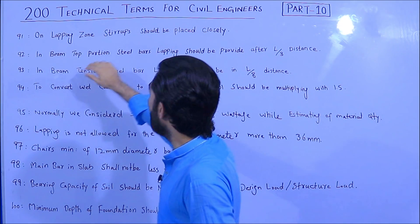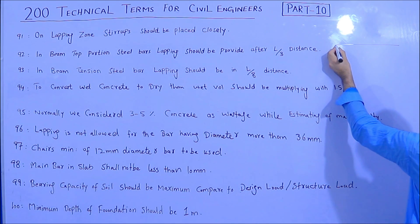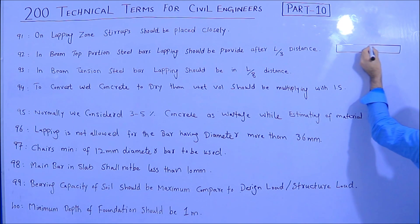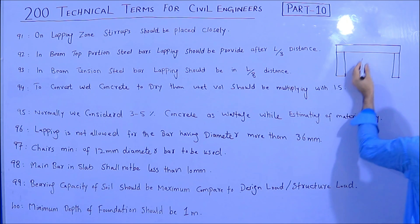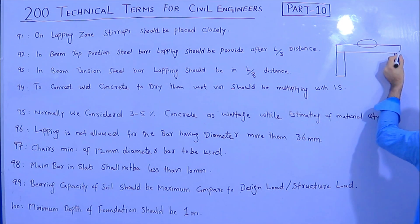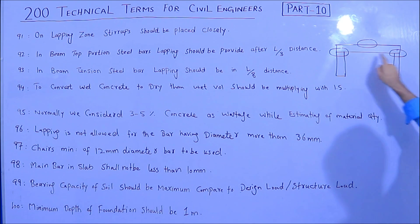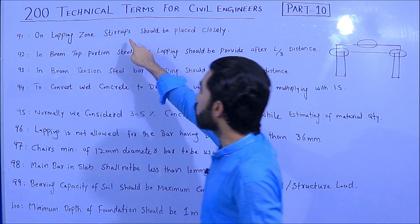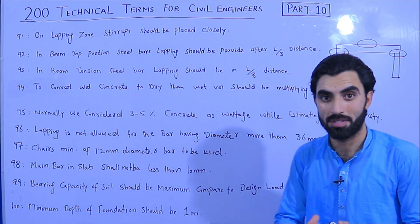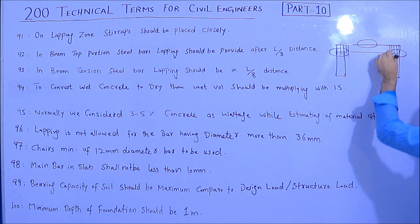Term 91: Lapping zone. In a beam with two supports, the top portion near the supports and the bottom portion at mid-span are lapping zones. In the lapping zone, stirrups should be placed closely together. This is a very important term.